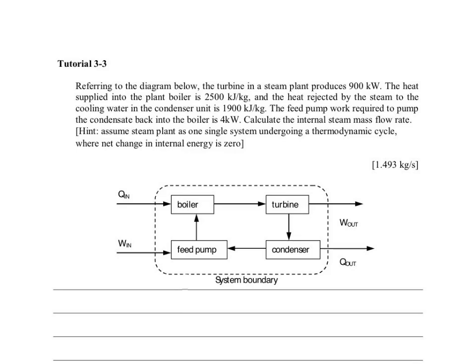In this problem, the steam plant produces 900 kilowatts of energy. That is work output, that's power. What we have on the top of the question is work per unit time which is 900 kilojoules per kilogram. So we have to be careful about this.